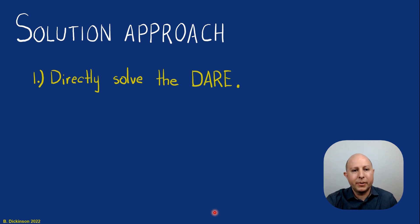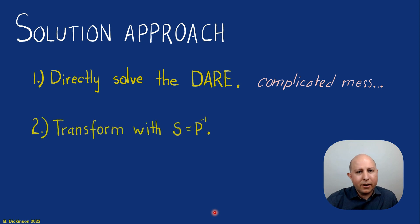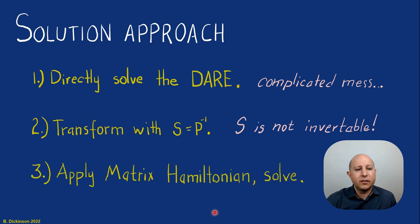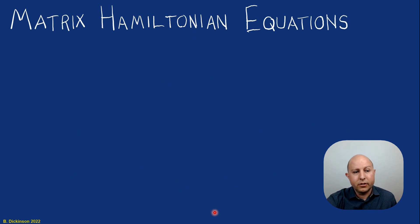We could put in the problem data and solve the DARE, but this tends to yield a complicated mess. So instead, I tried to transform the Riccati equation by introducing the inverse of P as s, like we did in section 1. Unfortunately, s was not invertible in that case. So what I ended up doing was applying something called the matrix Hamiltonian equation. This is another way to solve Riccati equations.